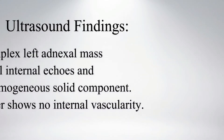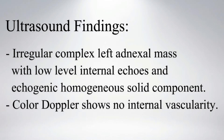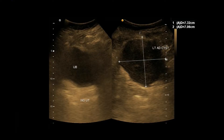On ultrasound, an irregular complex left adnexal mass with low-level internal echoes and echogenic homogenous solid component is noted. Color Doppler shows no detectable internal vascularity. The left image shows no uterus posterior to the urinary bladder.